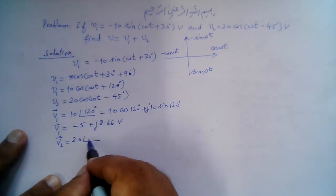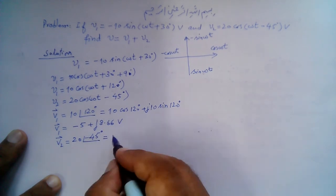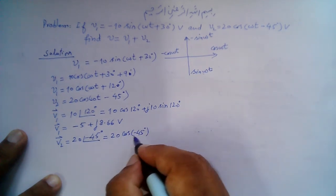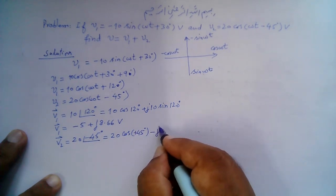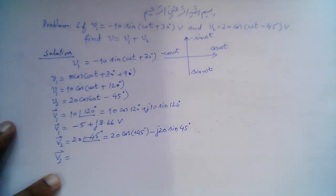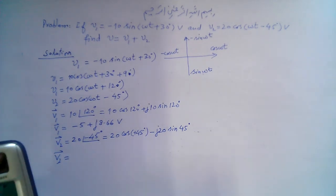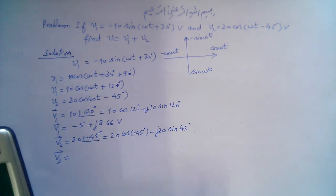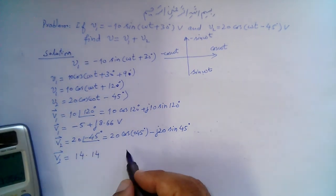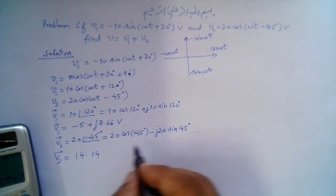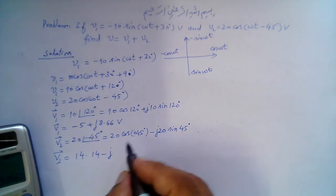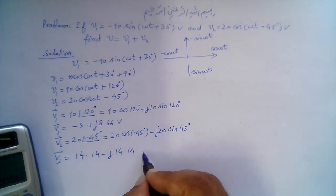Similarly, V2 = 20∠−45°, which gives 20 cos(45°) − j·20 sin(45°). cos(45°) multiplied by 20 gives 14.14. Since sin(45°) equals cos(45°), the imaginary part is also 14.14. So V2 = 14.14 − j14.14 volts.